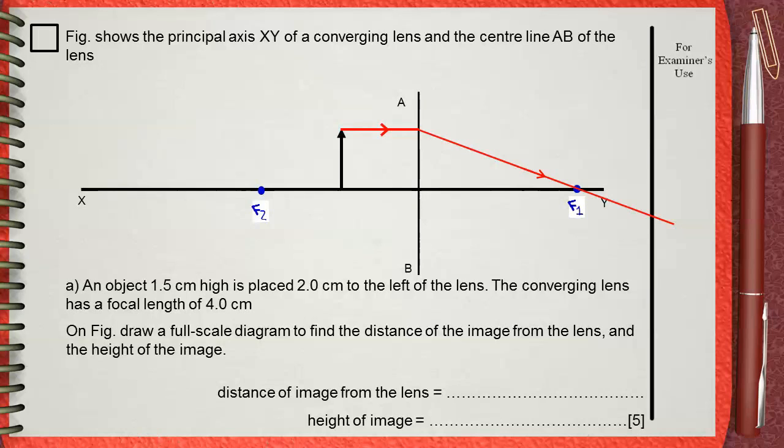As you see the two rays will never intersect, so you will draw an extension for each ray. The point of intersection of the two extensions represents the top of the image and this dotted green arrow represents the image.